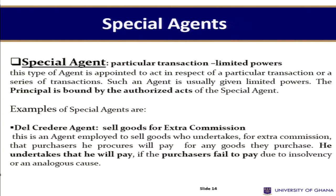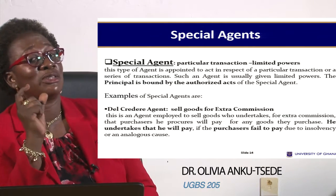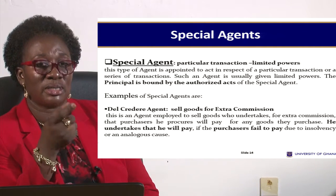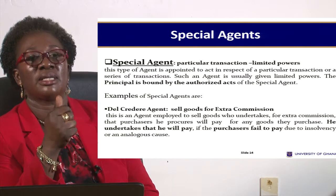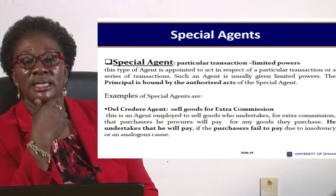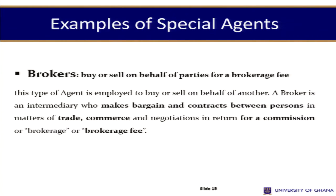A special agent has powers to enter into transactions on behalf of a principal for a particular transaction but has limited powers. An example of a special agent is a del credere agent. This type of agent sells goods for an extra commission, and for that extra commission, he undertakes to the principal that he will pay if the purchaser fails to pay. He is authorized to sell the goods for commission, but gets extra commission for undertaking that guarantee.